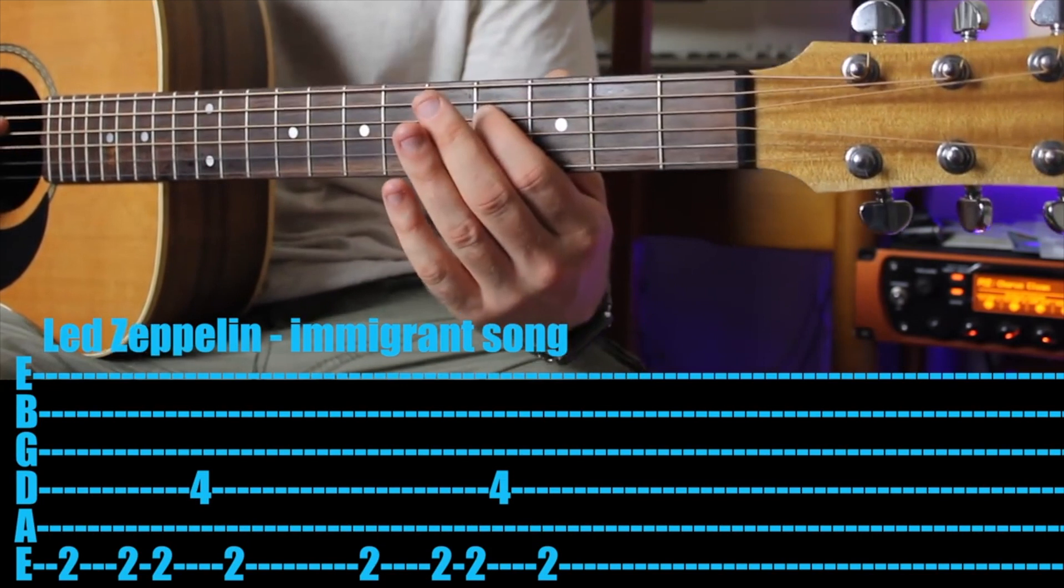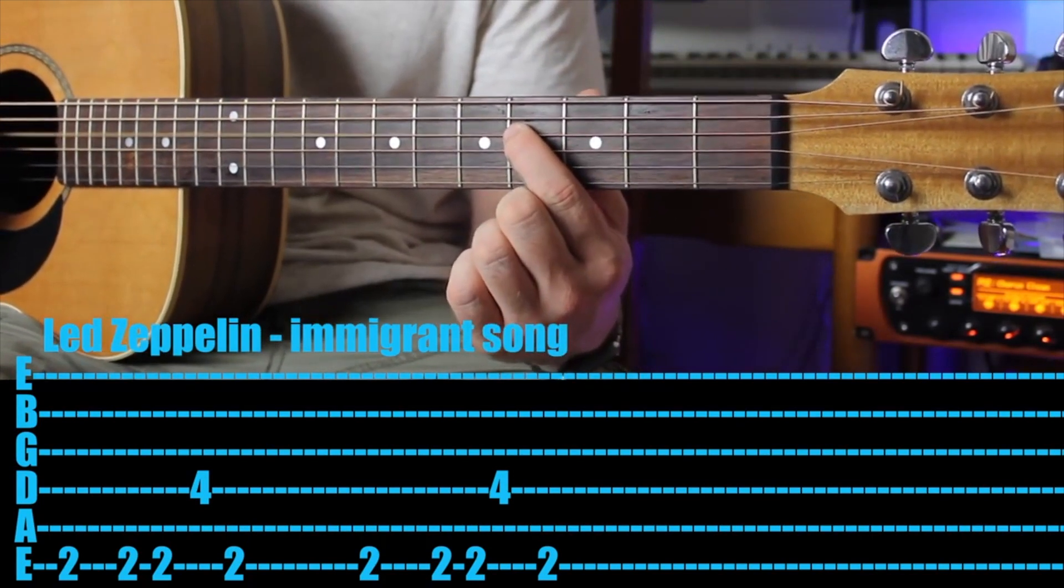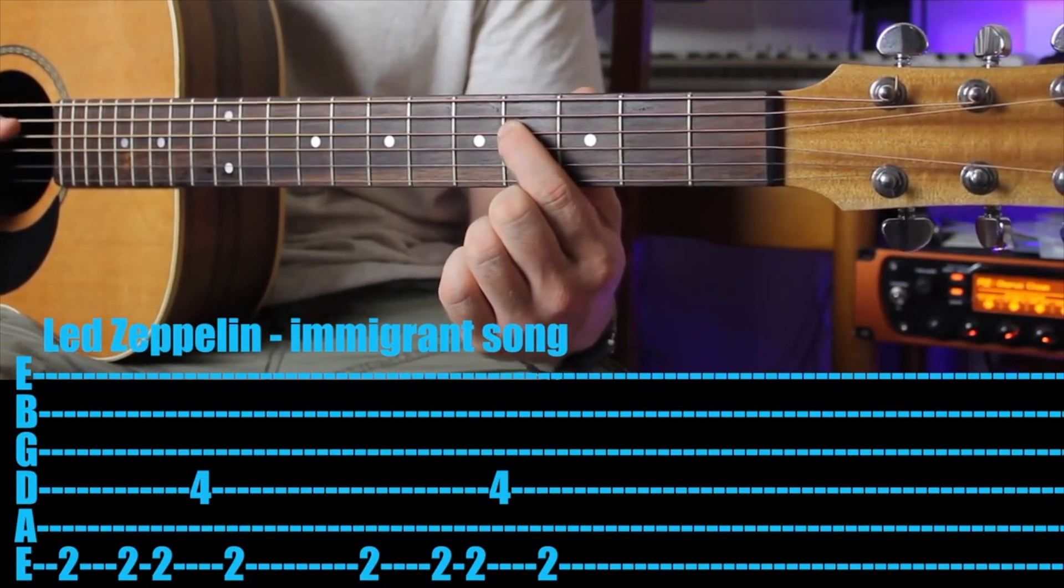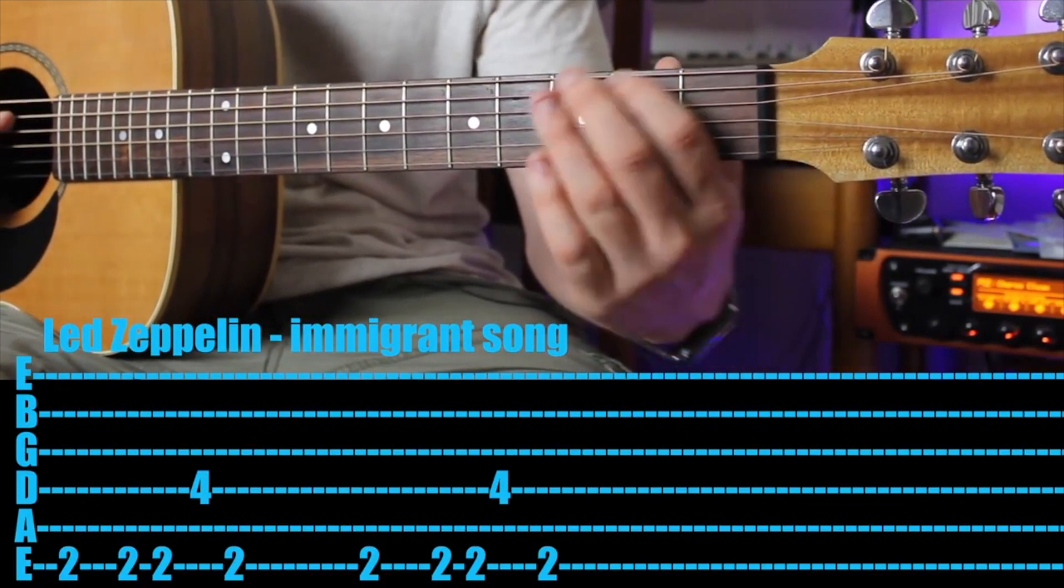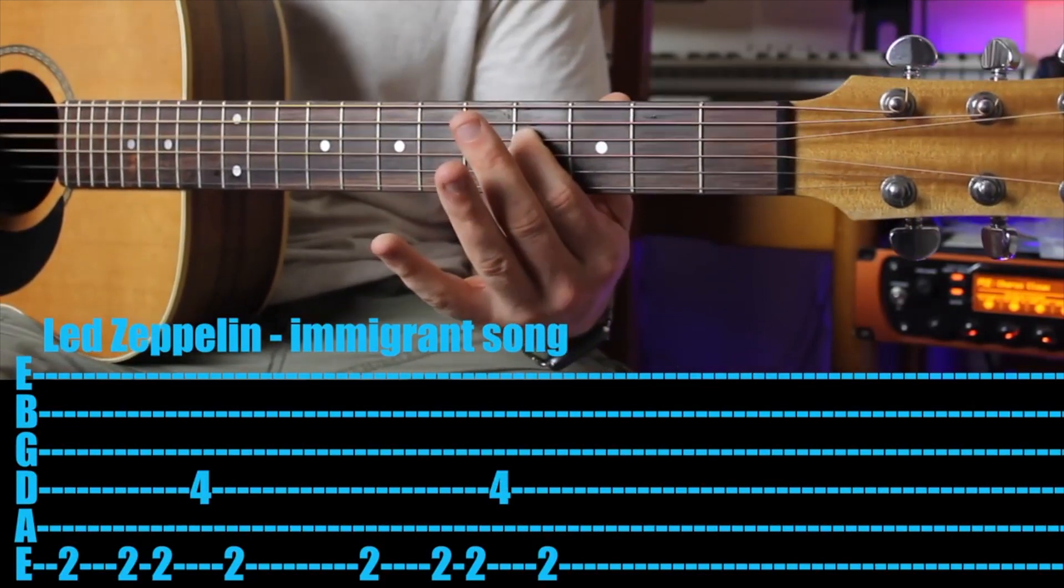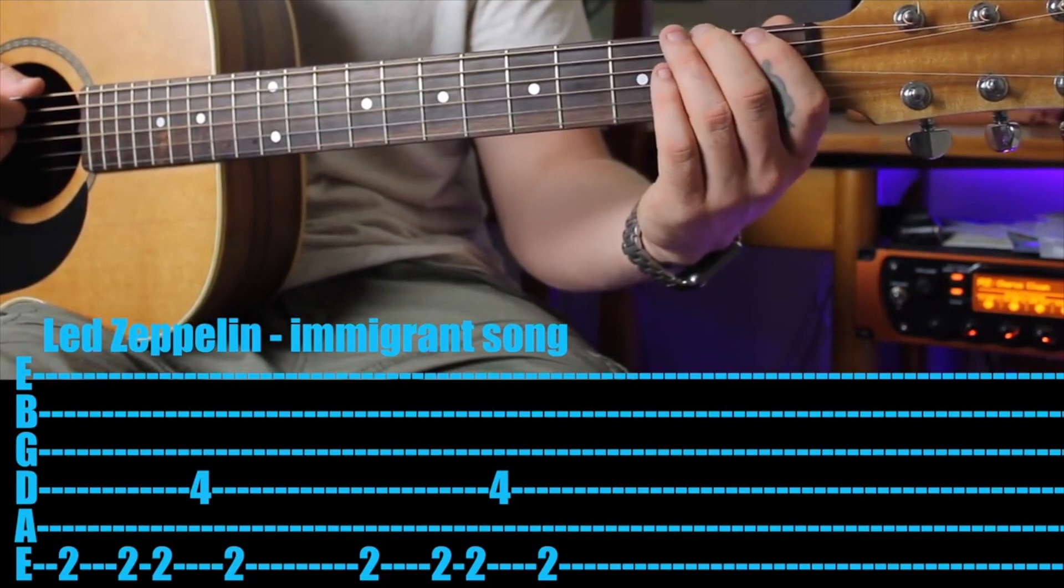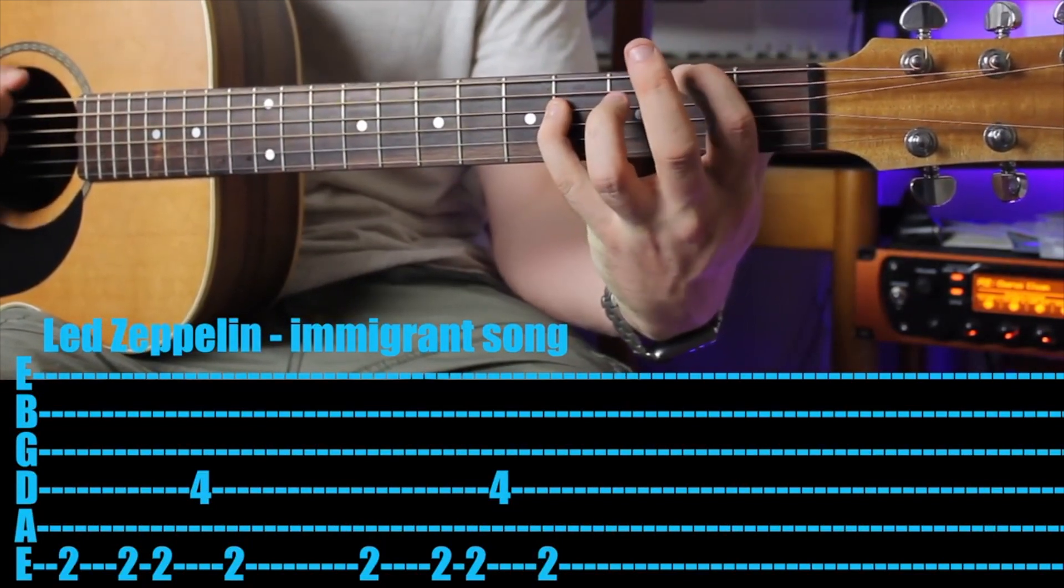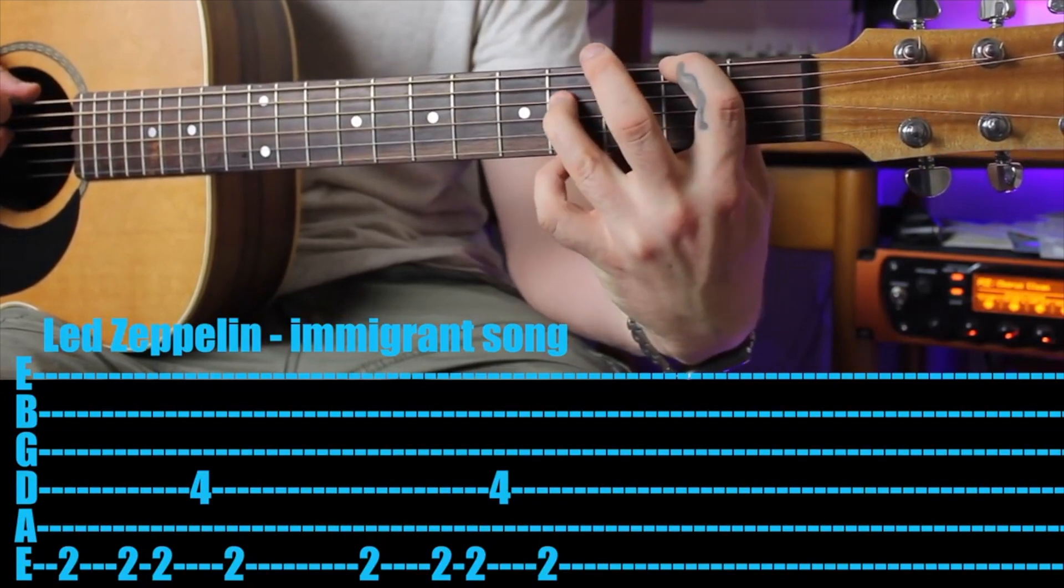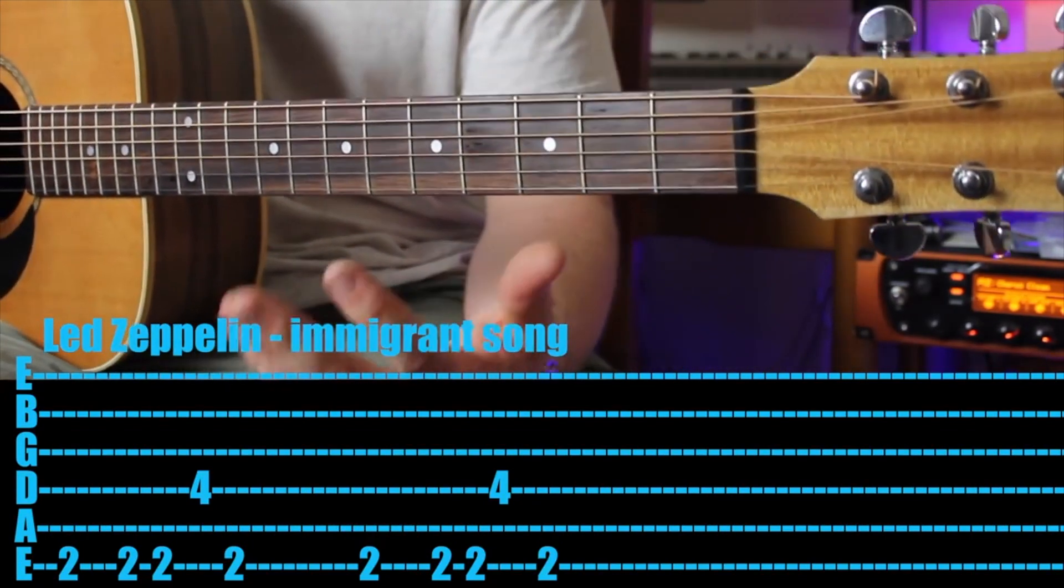Then you actually jump with your first finger again to the fourth fret of the fourth string. So you go from the F sharp or second fret of the sixth string, you jump down and you actually play an octave. So what that means is if you were to play through a scale, it's the same note, but up the scale or up the octave or up those eight steps.